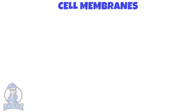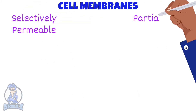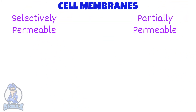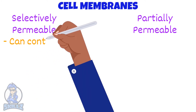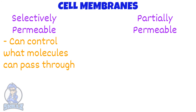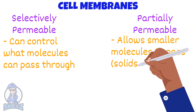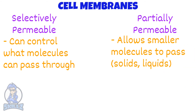The cell membrane is both selectively permeable and partially permeable. Selectively permeable means that membranes can control which molecules they let through. Partially permeable membranes allow smaller molecules like water and gases, but not larger molecules, to pass through.